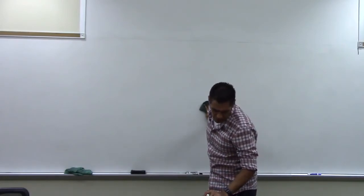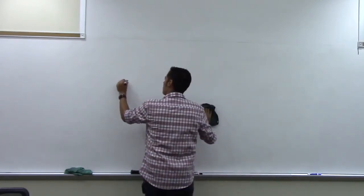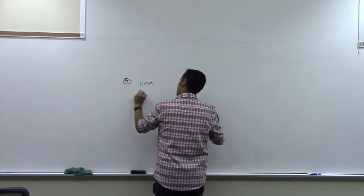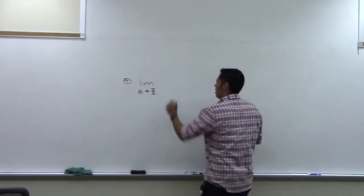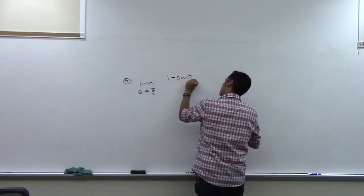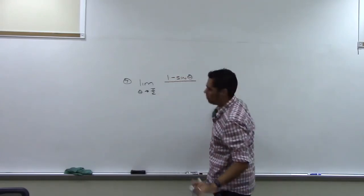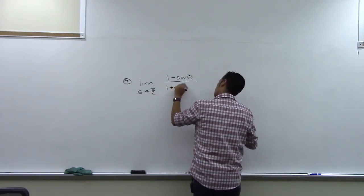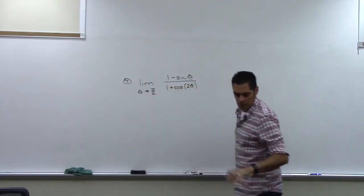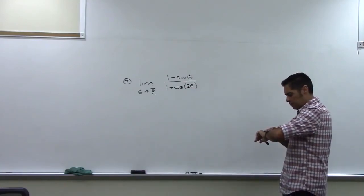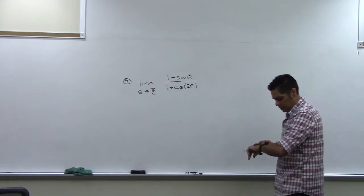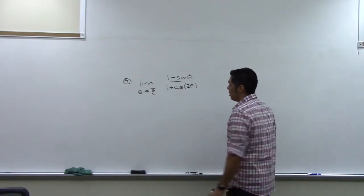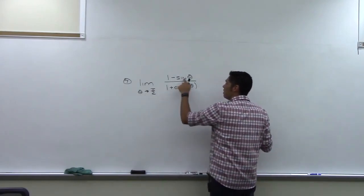Number seven: the limit as θ goes to π/2 of (one minus sine θ) over (one plus cosine 2θ). Let's check by substituting π/2 in for θ.